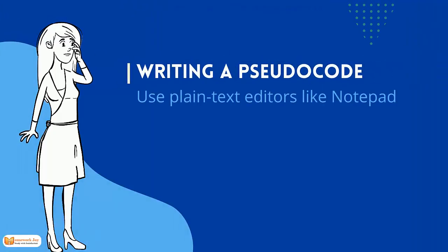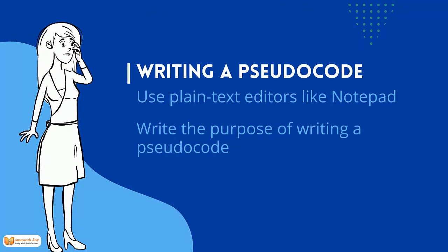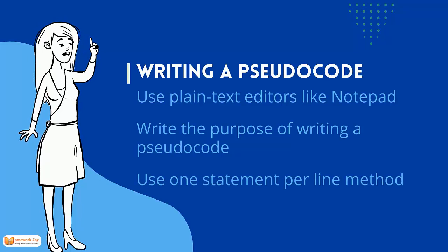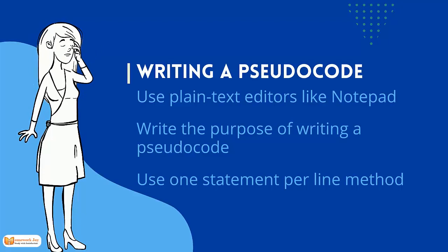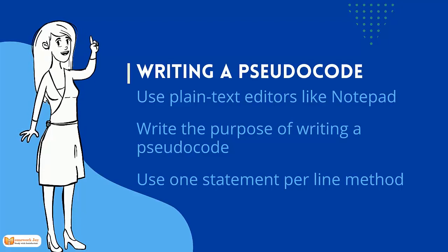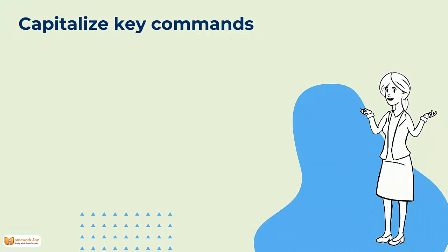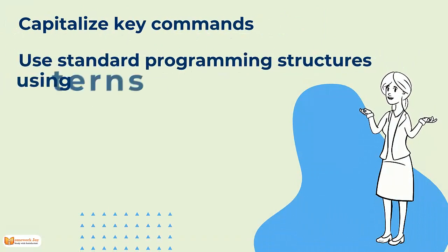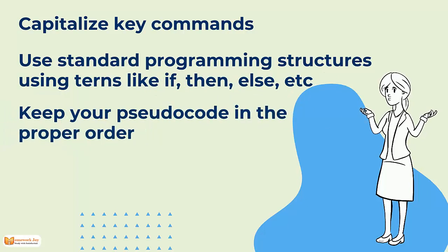Step two: Writing pseudocode. Use plain text editors like Notepad. Write the purpose of your pseudocode. Use one statement per line. Capitalize key commands. Use standard programming structures with terms like if, then, else, etc. Keep your pseudocode in the proper order.